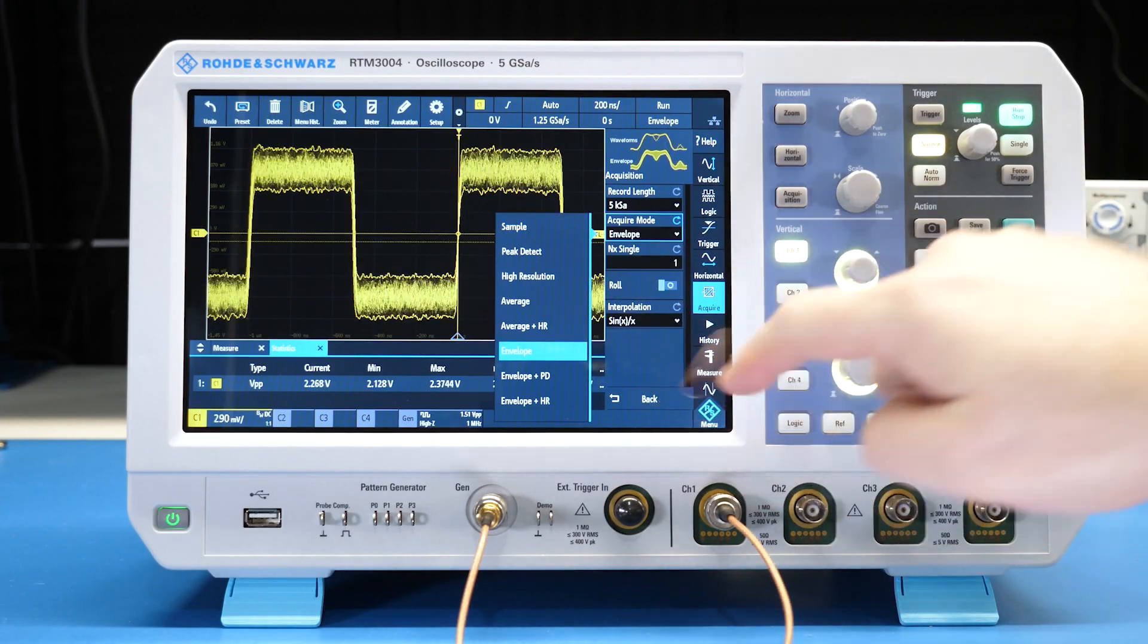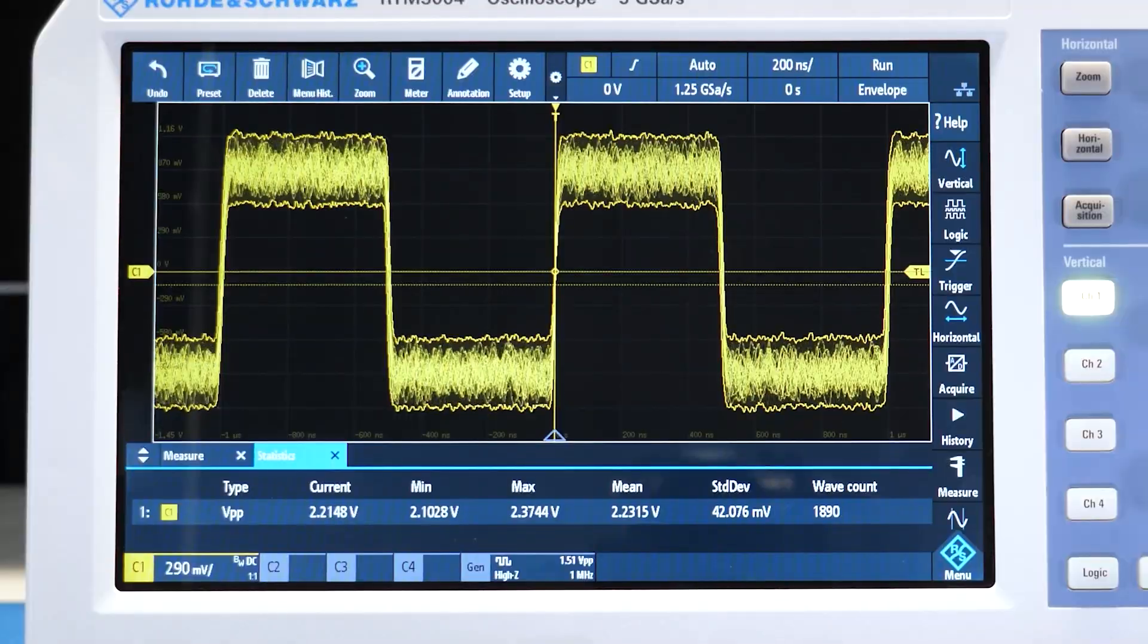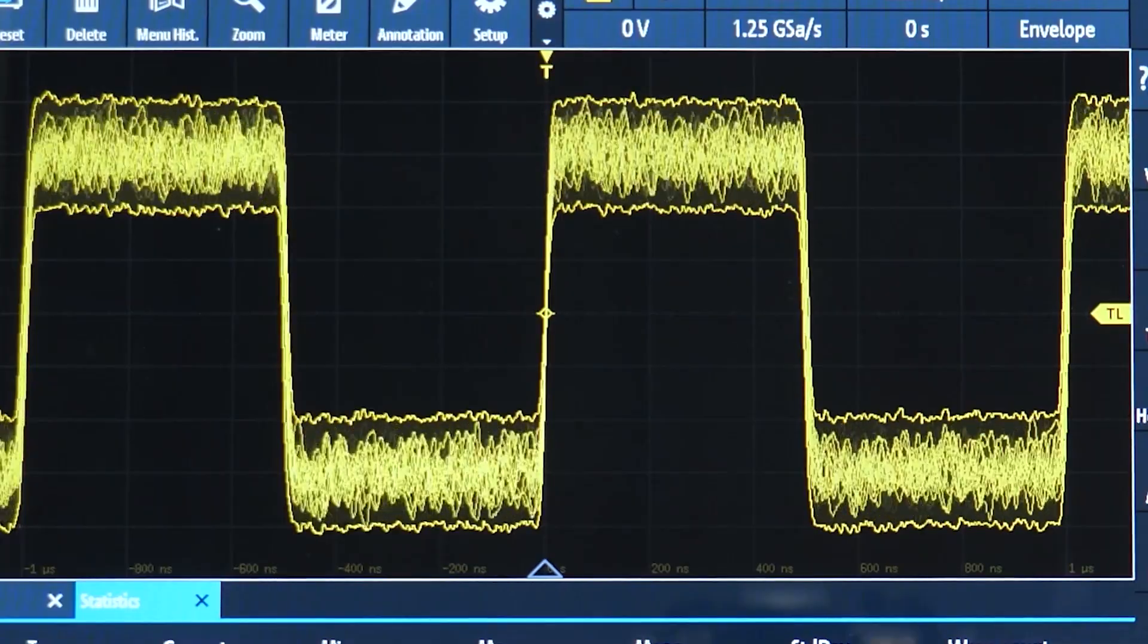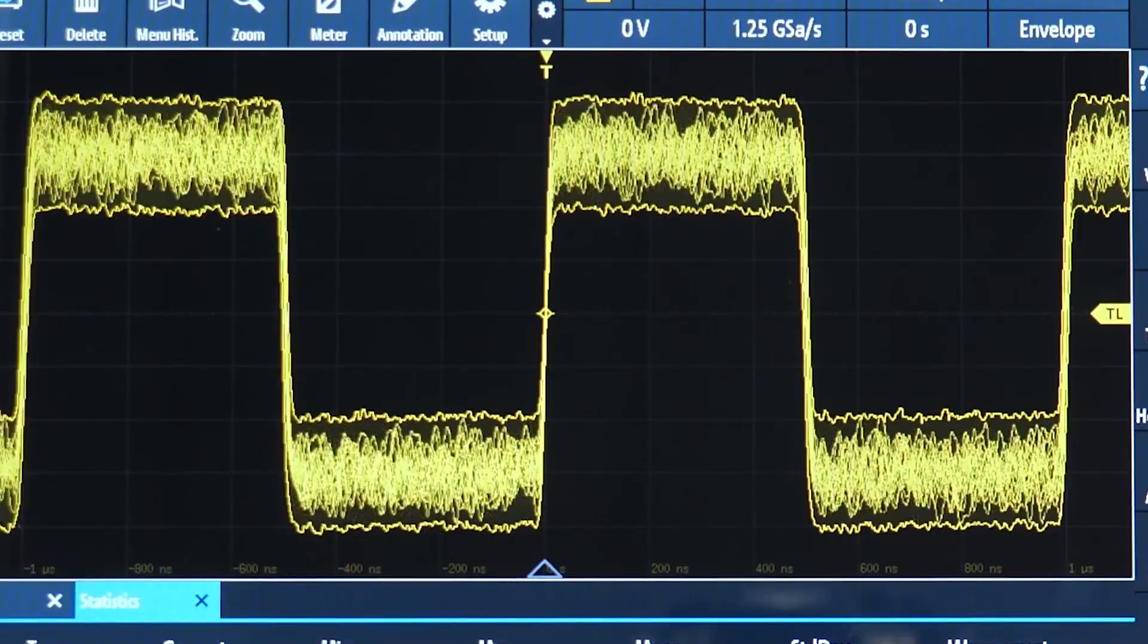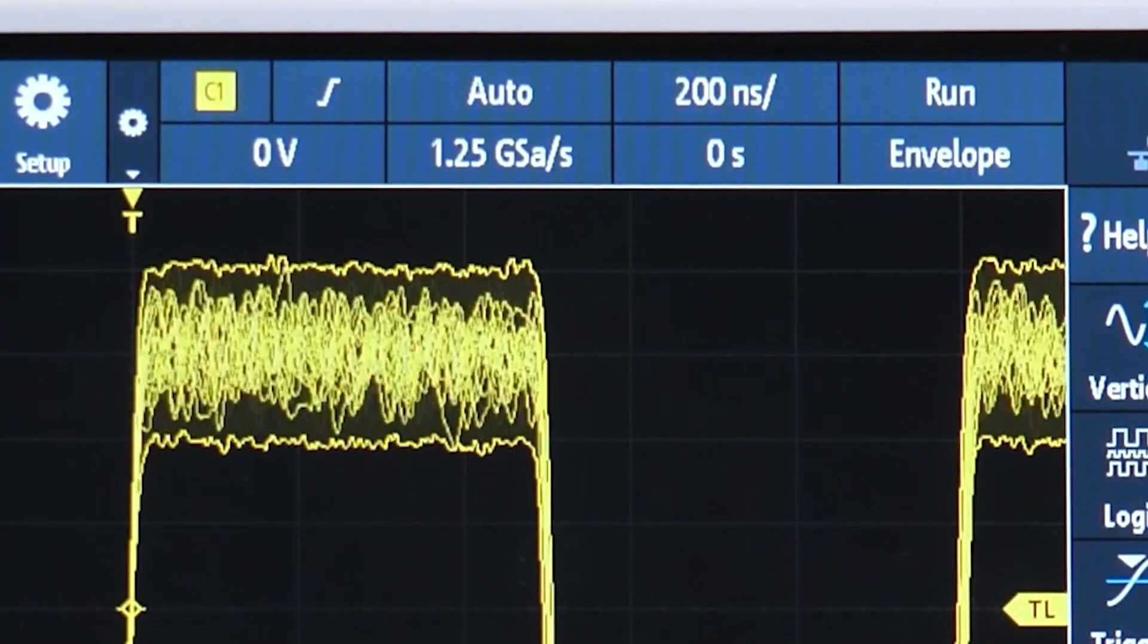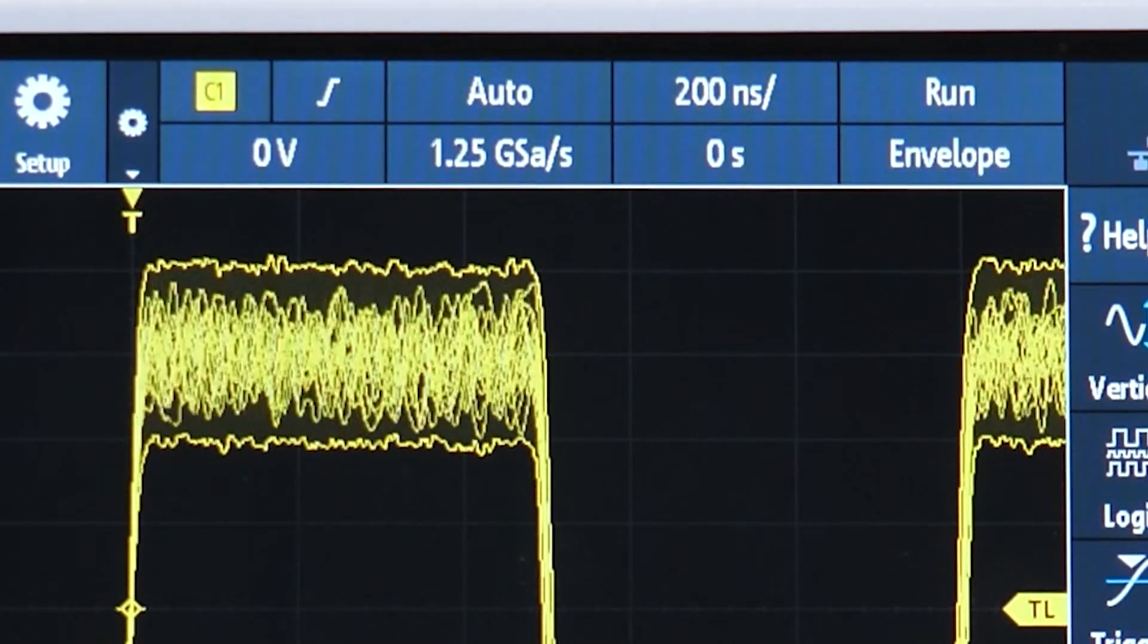First, envelope mode draws the max and min values along with the actual samples in between. It is like peak detect and sample mode combined. It is helpful when visualizing noise or transients relative to the actual signal.